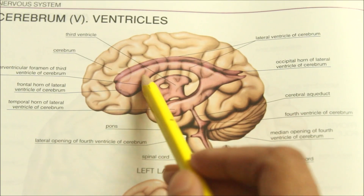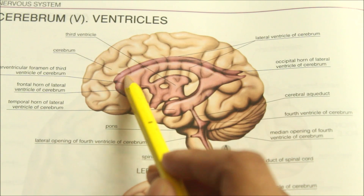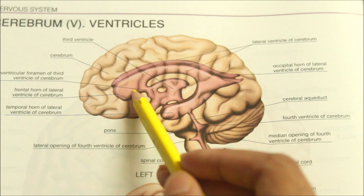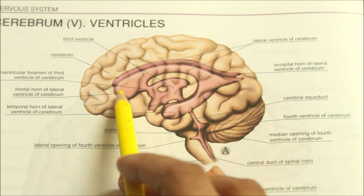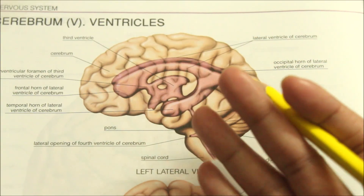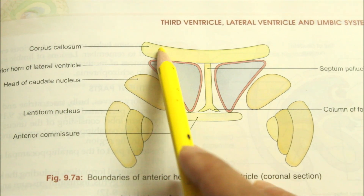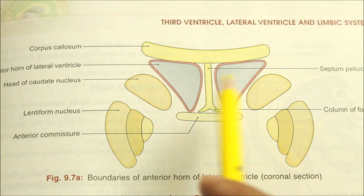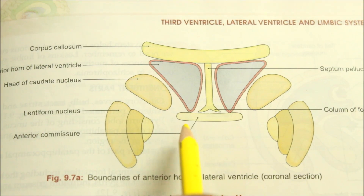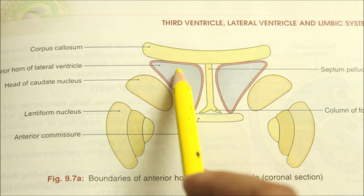Now let's learn about the anterior horn of the lateral ventricle. It is the part of the lateral ventricle which lies in front of the interventricular foramen and extends into the frontal lobe. It is directed forwards, laterally and downwards, and is triangular in cross section. Looking at boundaries via a coronal section: the anterior boundary is the posterior surface of the genu and rostrum of the corpus callosum. The roof is formed by the anterior part of the trunk of the corpus callosum. The floor is formed by the head of the caudate nucleus and the upper surface of the rostrum of the corpus callosum. The medial wall is formed by the septum pellucidum and the column of the fornix.